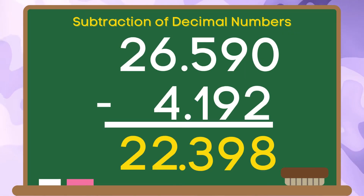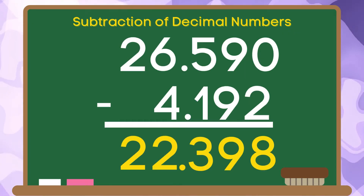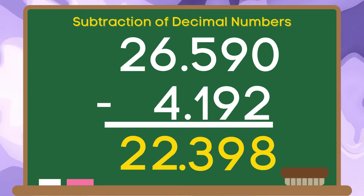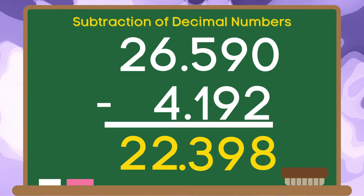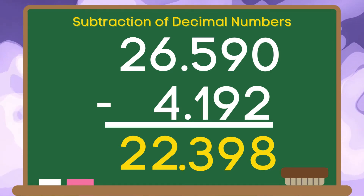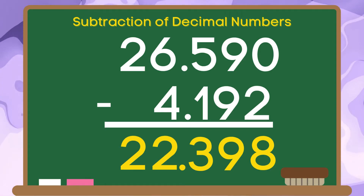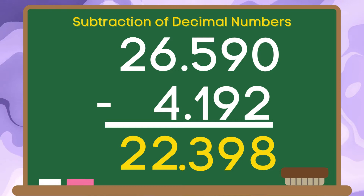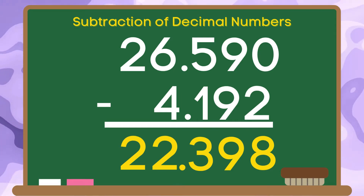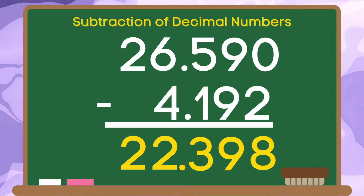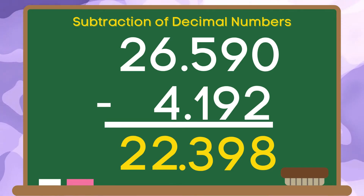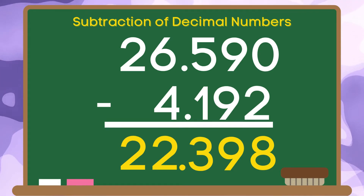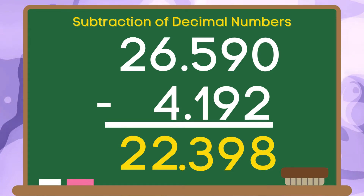Therefore, if we are going to subtract 4 and 192 thousandths from 26 and 590 thousandths, the answer is 22 and 398 thousandths.